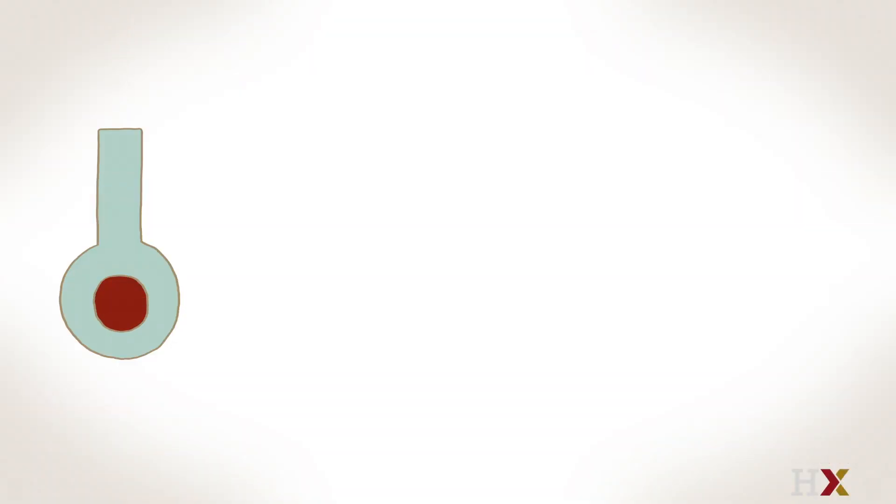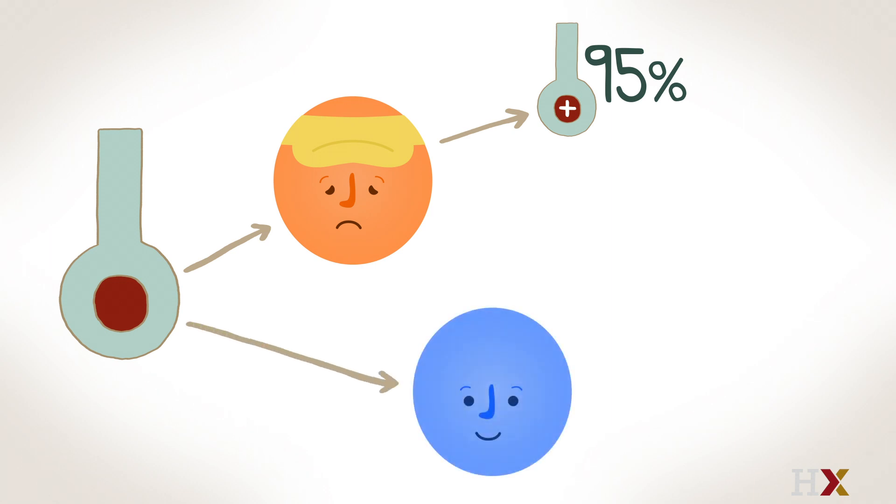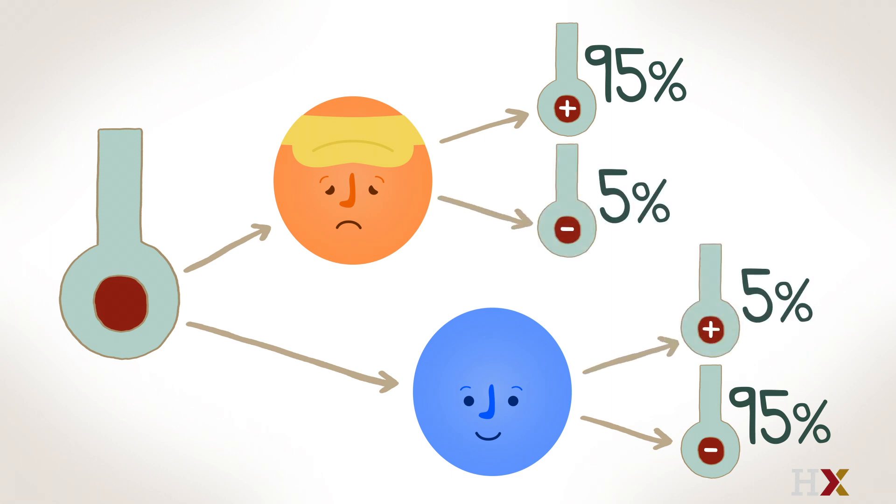Suppose that 95% accurate means if a person has conditionitis, then 95% of the time they will test positive, which would be the correct diagnosis. If the person does not have conditionitis, then 95% of the time they will test negative, which again would be the correct diagnosis. In other words, there is a 5% chance of misdiagnosis in each case.